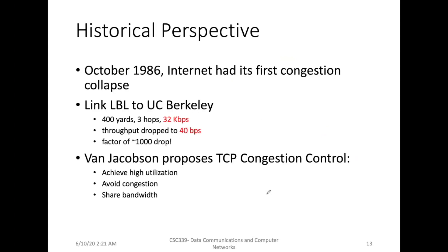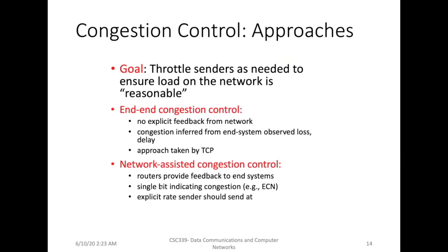Let me present the historical perspective of congestion. The first congestion happened in 1986 when the internet had its congestion collapse — there was a connection between LBL and UC Berkeley of 32 kilobits per second, and it dropped to 40 bits per second, a factor of a thousand. When this happened, Jacobson proposed the TCP congestion control mechanism to achieve high utilization, avoid congestion, and share bandwidth with multiple hosts in a fair manner.